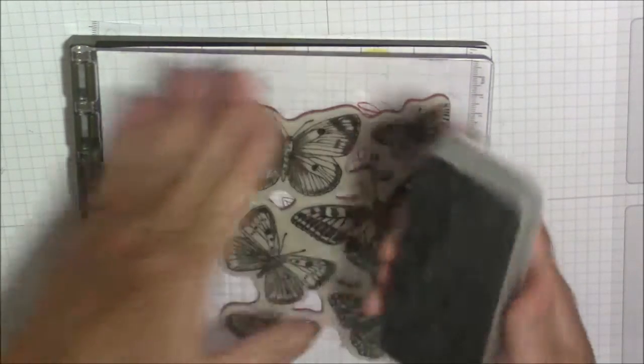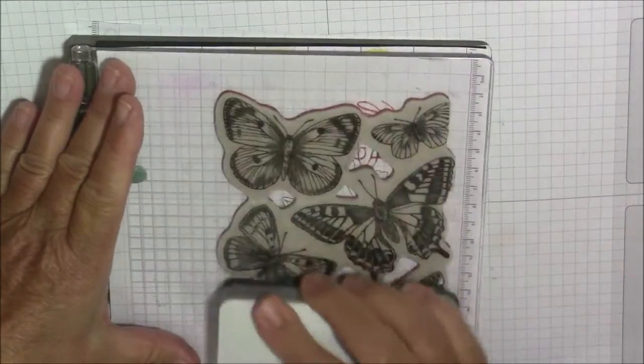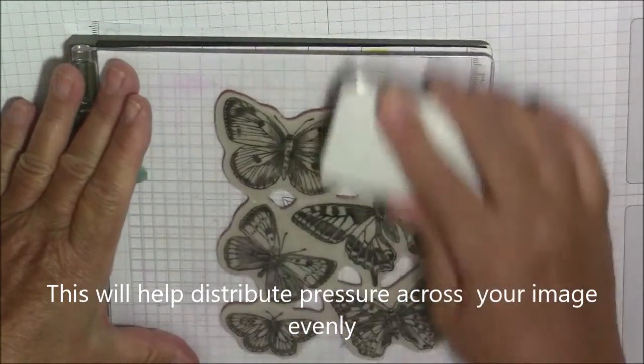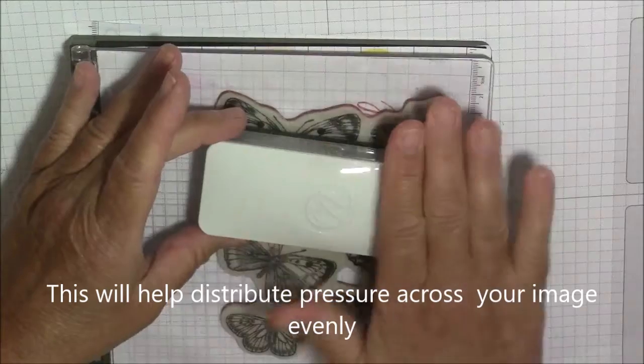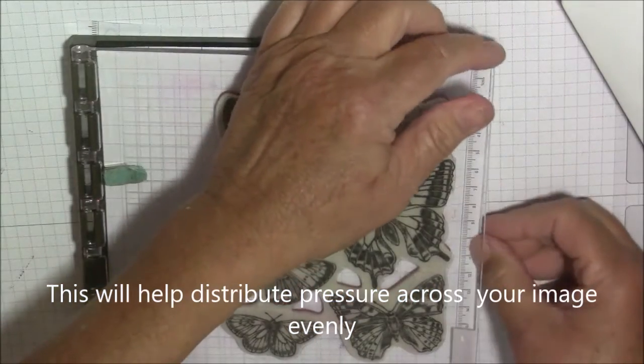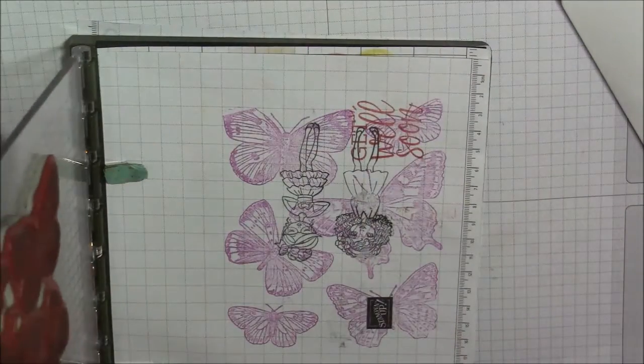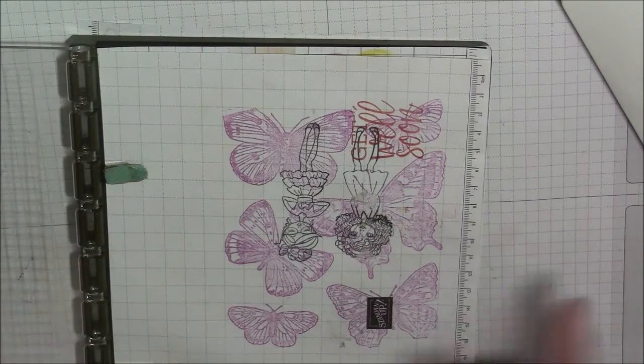What we're going to do is just rub that over and it helps distribute the weight across. Like I said, I didn't ink this up real good making sure I had good coverage. I just want to see where I'm going to place my paper.